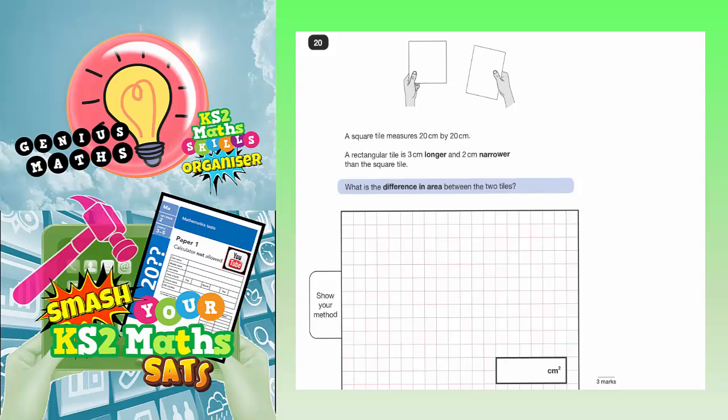Question 20. A square tile measures 20 by 20. Well let's just draw that on. So the square tile is this one. So it's 20 by 20.